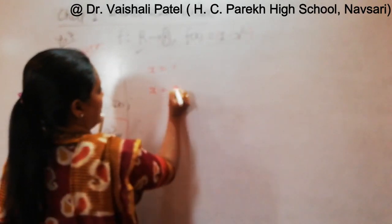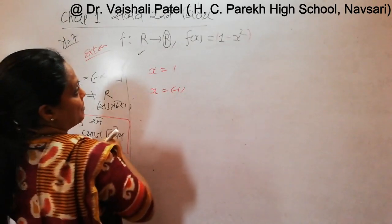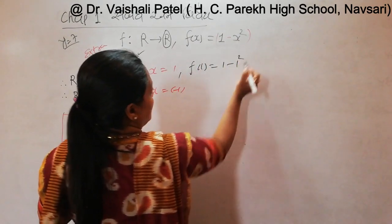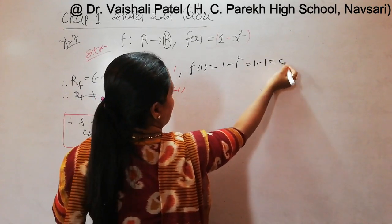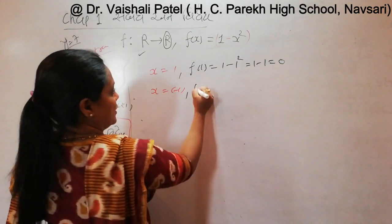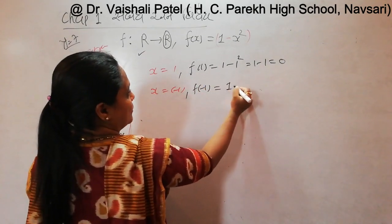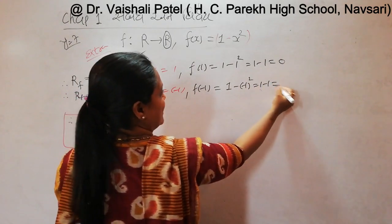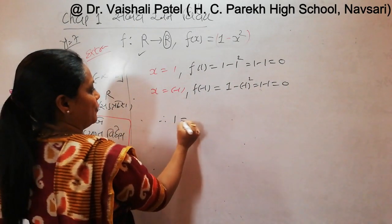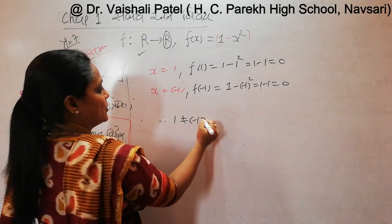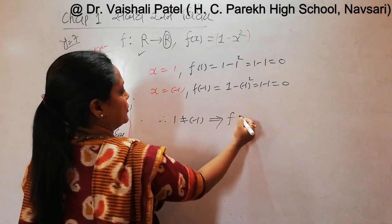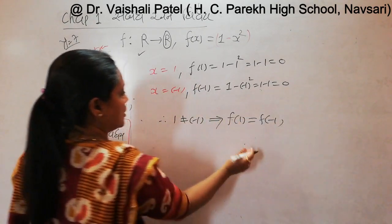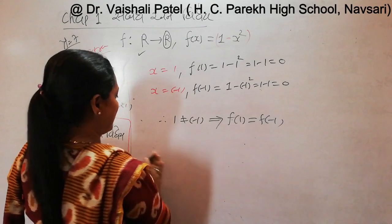x equal to 1 and x equal to minus 1. f of 1 equals 1 minus 1 squared, which is 1 minus 1, equals 0. And f of minus 1 equals 1 minus (-1) squared, which is 1 minus 1, equals 0. Therefore, 1 is not equal to minus 1, which implies f of 1 is equal to f of minus 1.